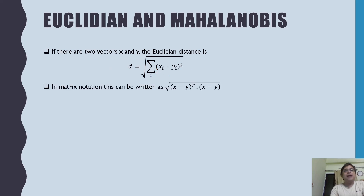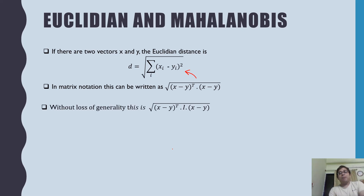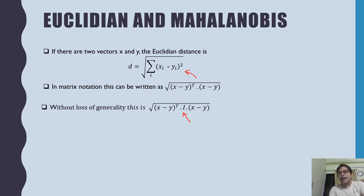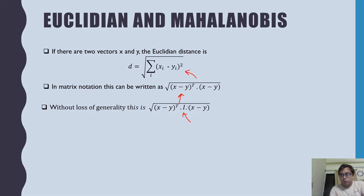You can write this in vector notation as (x − y)^T (x − y). Without any loss of generality, I can now introduce a matrix in the middle. If this matrix is the identity matrix — a square matrix where diagonal elements are one — the result is the same as the Euclidean distance. So essentially our distance measure has the form: transpose of the difference vector, times a square matrix, times the difference vector.